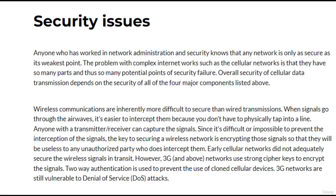There are some security issues. Anyone who has worked in network administration and security knows that any network is only as secure as its weakest point. The problem with complex internetworks such as cellular networks is that they have so many parts and thus so many potential points of security failure. Overall security of cellular data transmission depends on the security of all four major components listed above.